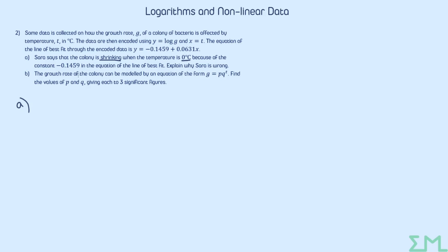If we think about it, when T equals zero, Y is negative 0.1459, which is not the growth rate. This is the mistake that Sarah has made. She has forgotten that Y does not represent the growth rate. It is in fact log G that equals minus 0.1459. If you wanted to work out the growth rate when the temperature was zero, you would have to do 10 to the minus 0.1459, which is most definitely positive. This explains why she is wrong because it means that the growth rate is actually positive. So positive growth rate when T equals zero degrees Celsius.